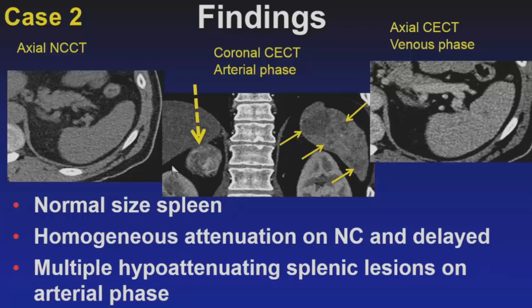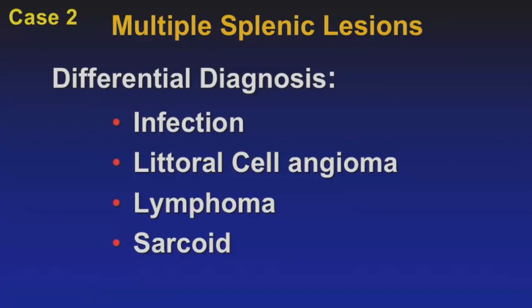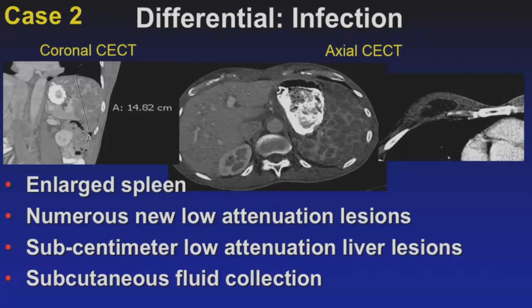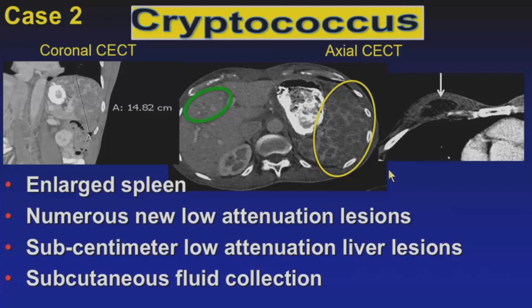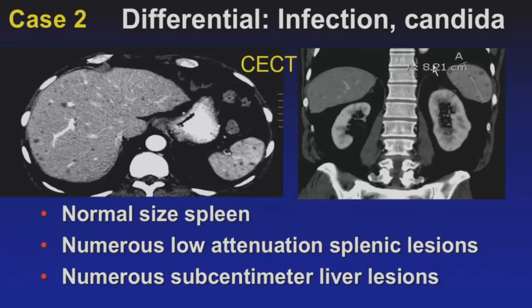The differential for multiple splenic lesions includes infection, littoral cell angioma, lymphoma, or sarcoid. For infection: this patient had nonspecific infectious symptoms, an enlarged spleen, numerous low-attenuation lesions throughout the spleen, sub-centimeter liver lesions, and a peripherally enhancing fluid collection in the right chest wall. Aspiration yielded the unusual diagnosis of cryptococcal infection. He was treated and the findings in the spleen and liver resolved. Another case shows hematogenous candida infection — numerous sub-centimeter low-attenuation spleen and liver lesions that also resolved after treatment.